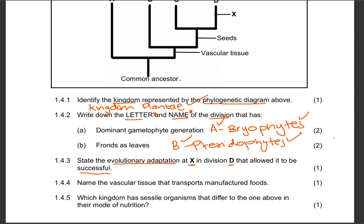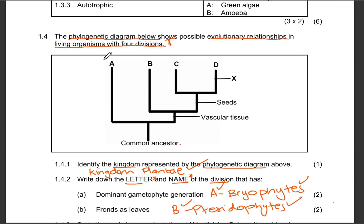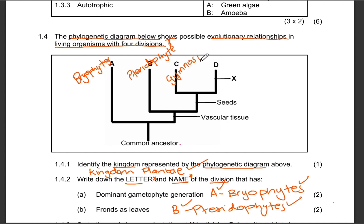Let's look at Division D. From the diagram, we can tell that the first division is bryophytes, the second division is pteridophytes, Division C is gymnosperms, and Division D is angiosperms.